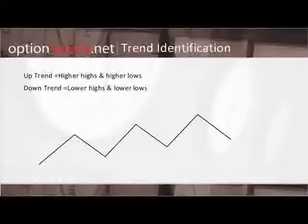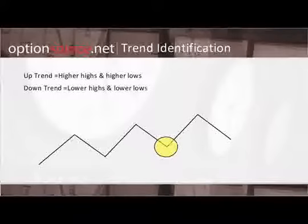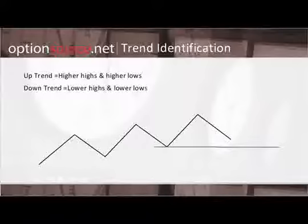This may continue on for quite some time. However, what we want to be aware of is that a downtrend, or the start of a downtrend, always begins with a lower high and then followed up by a lower low. So in this case, we go back to the previous trough and we can establish that as a benchmark low.